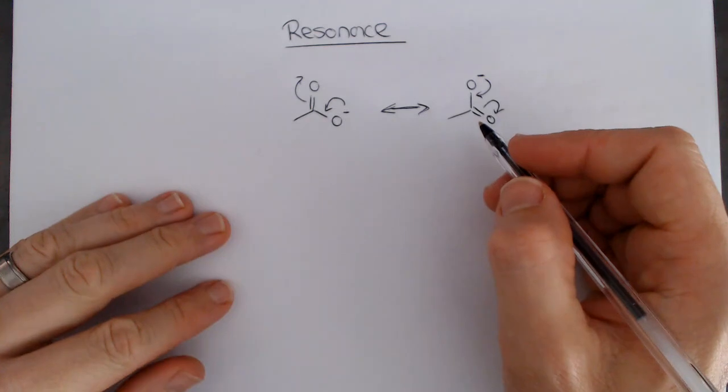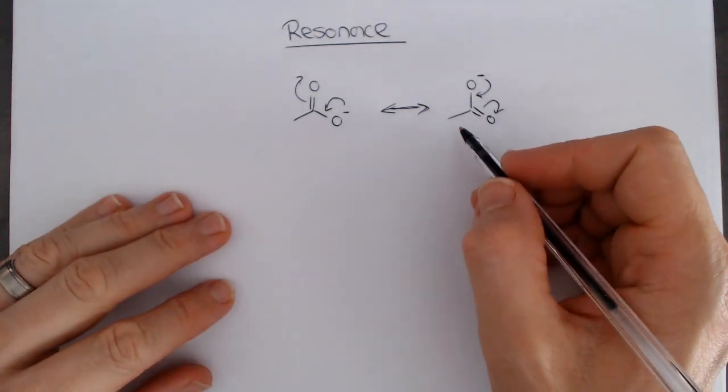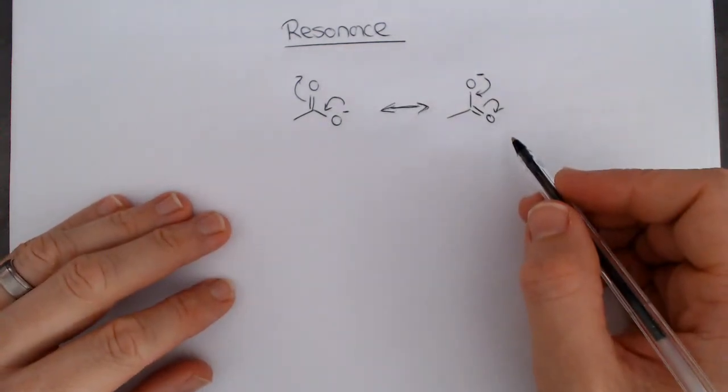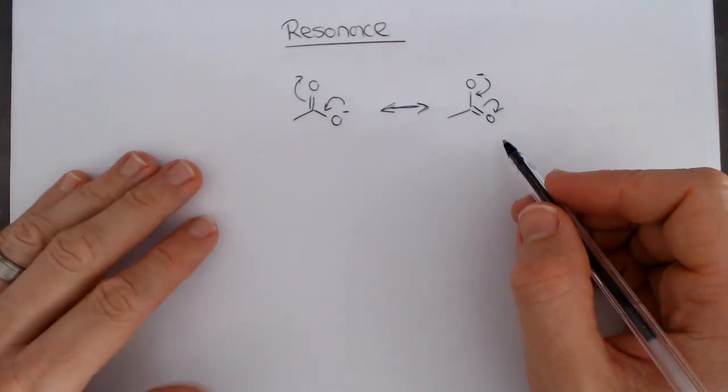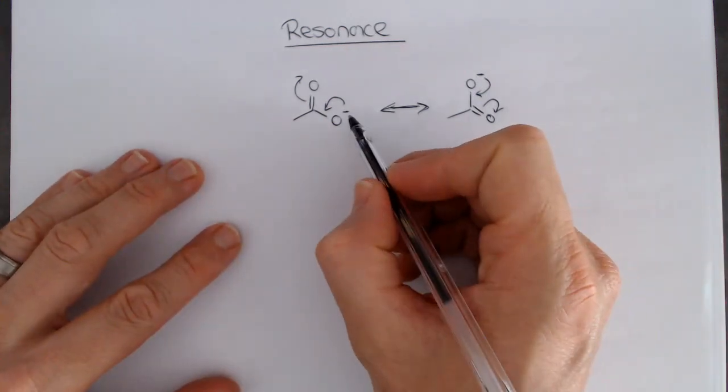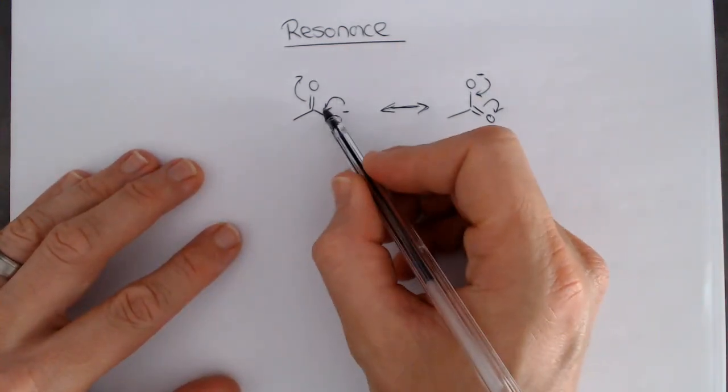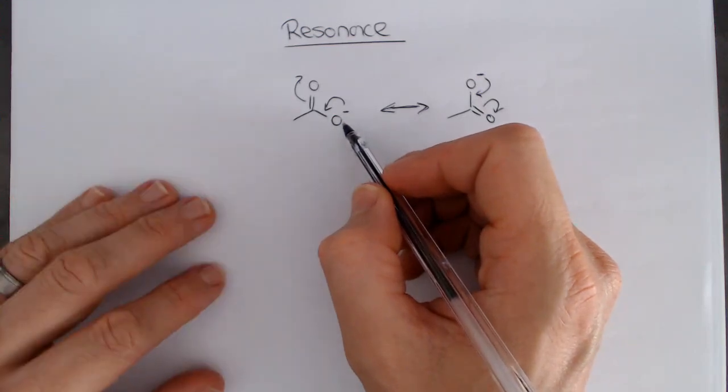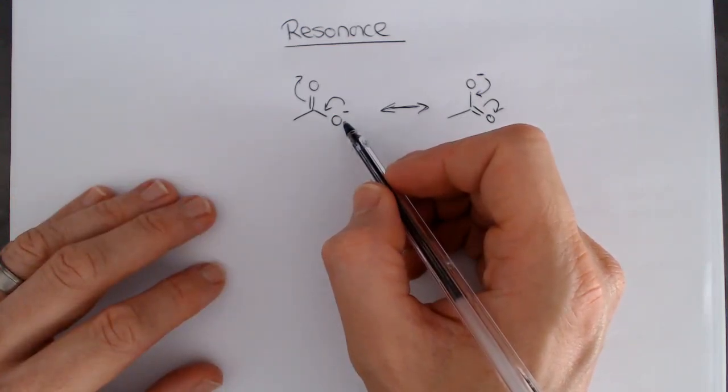You should have learned this from first year, and you should be able to do these sorts of things. I just want to take it one little step further and have a look at what resonance means from an orbital perspective, because there's an important consideration here that we need to look at.